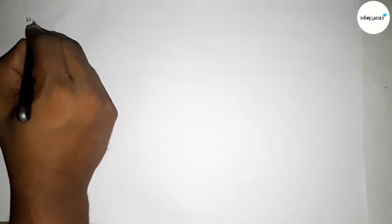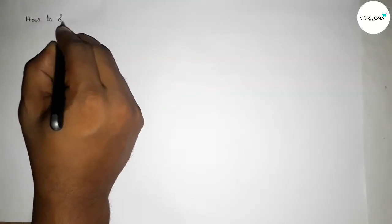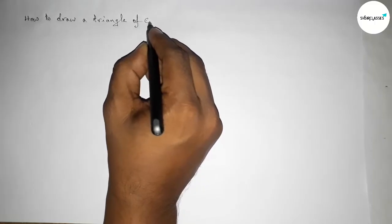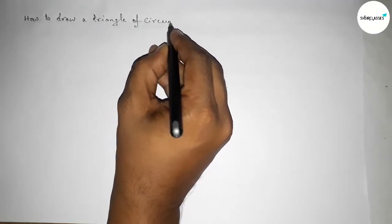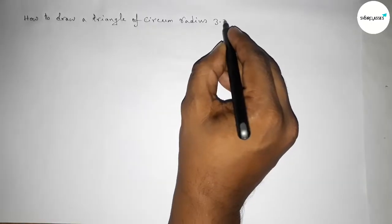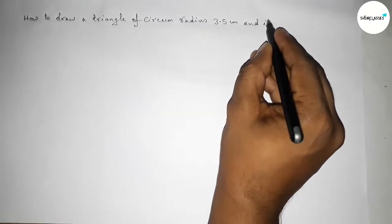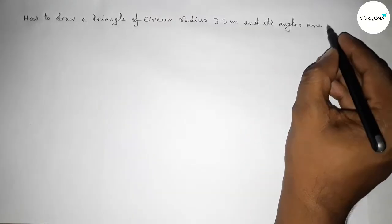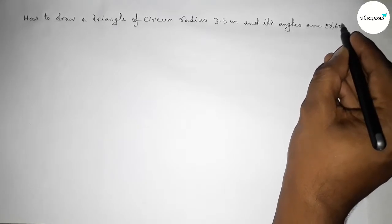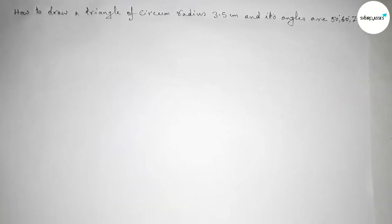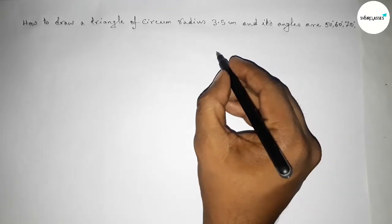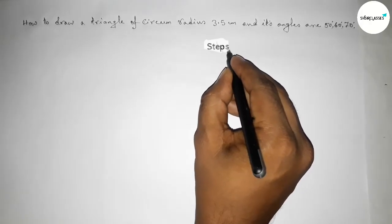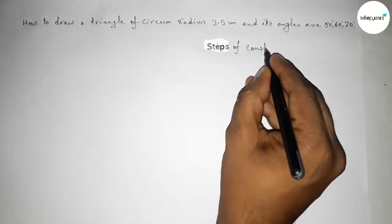Hi everyone, welcome to Size Share Classes. Today in this video we are discussing how to draw a triangle of circumradius 3.5 centimeters with given angles of 50 degrees, 60 degrees, and 70 degrees. Let's start the video. First, leaving some space here to write down the steps of construction and its calculations.